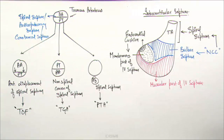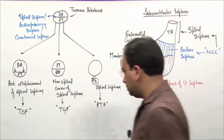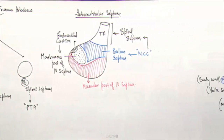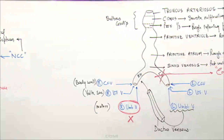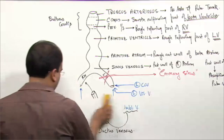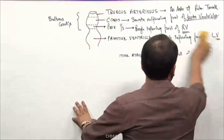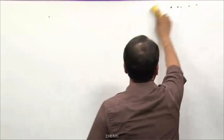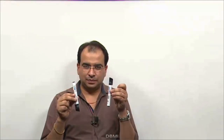Let us now talk about the aortic arch arteries. Initially we have the two dorsal aorta — the name itself suggests they are present dorsally. We have the two dorsal aorta and we have the developing heart tube in the front.